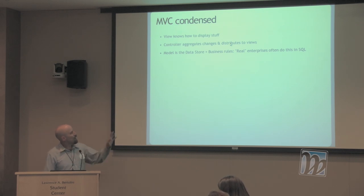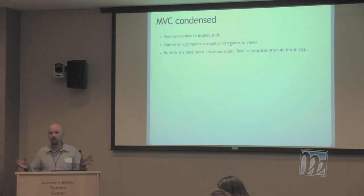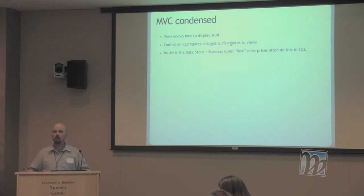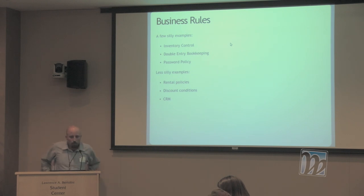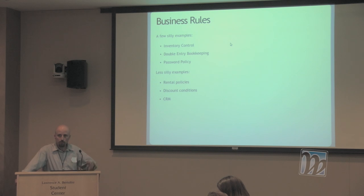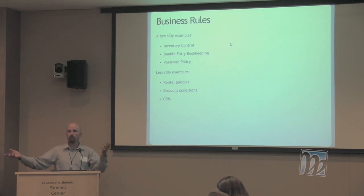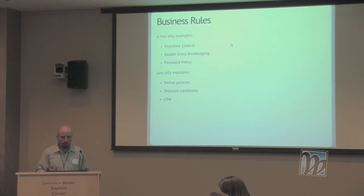The view knows how to display stuff, the controller aggregates changes and distributes them to views, and the model is the data store and the business rules. Real enterprises often do the model in SQL. Oracle is all about that — it's a database but it's also about rules, so you can't make a debit to one account without making a credit to another. Lots of integrity checks go into business rules: things like trying to move too much money, or simple things like an invalid password. Examples of business rules include inventory control — a system I'm currently working on has a pool of devices, but once we allocate them to a user we track that device individually.